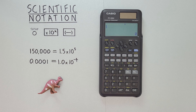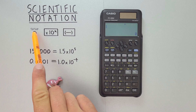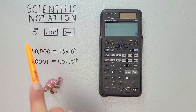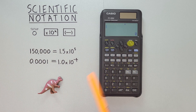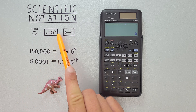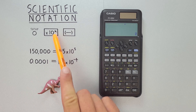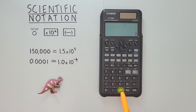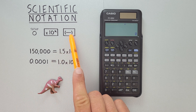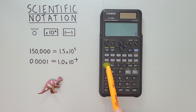To do this, we'll use the setup key, that looks like this, located here. The times 10 to the x key, that looks like this, located here. And the negative key, that looks like this, located here.